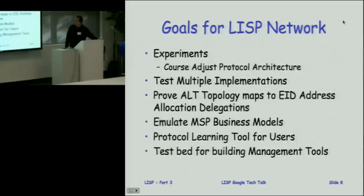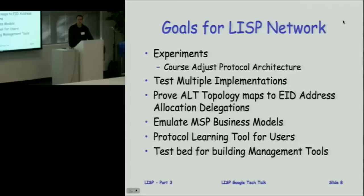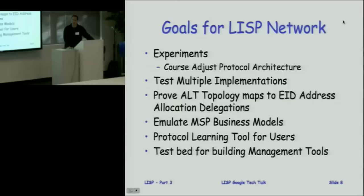The goals of the network are to do experiments and learn whether the protocols will actually work in practice rather than on paper. We're changing the internet drafts as we learn things, and trying to avoid the problem we had with BGP where the spec and the implementation are completely different. We really want the multi-vendor part to work well, and we want to test multiple implementations. We're being careful about feature creep.